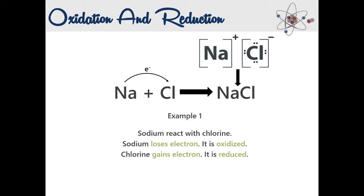There are many chemical reactions that involve oxidation and reduction. Let's look at one example of an actual chemical reaction. Here we have sodium, chlorine, and sodium chloride. Sodium reacts with chlorine to form sodium chloride, which is table salt. Sodium chloride is an ionic compound, which means it is made of ions. In order to form sodium chloride, Na+ and Cl- ions are needed. These two ions bond together because they have opposite charges.